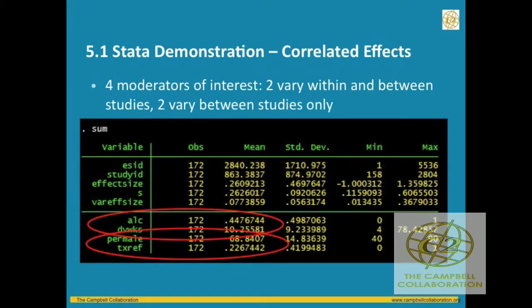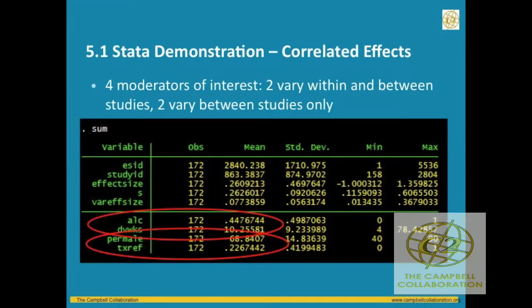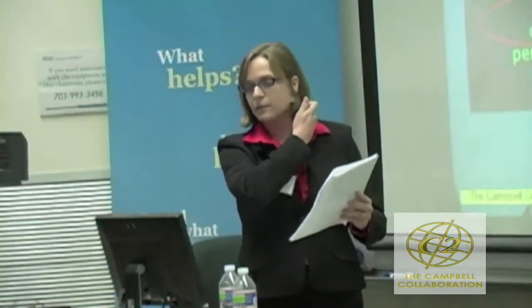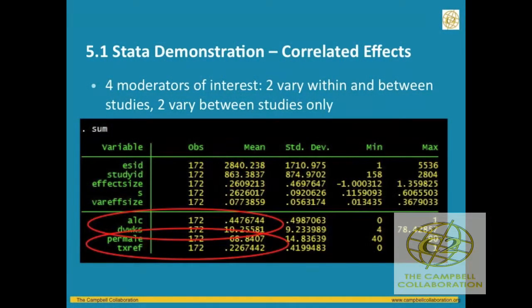Let's go back to our adolescent substance abuse treatment meta-analysis example with 172 effect sizes. Let's say we have four moderators of interest specified a priori as potentially important in affecting treatment effectiveness: two which vary within and between studies, and two which only vary between studies. We have an ALK variable — a dummy indicator for whether the effect size was for an alcohol use outcome — which varies within and between studies. Similarly, the DV_weeks variable, measuring the time frame of the outcome variable in weeks, varies within and between studies.